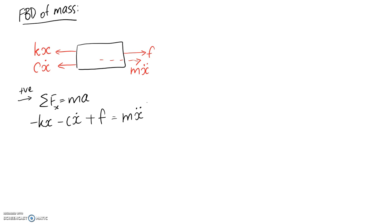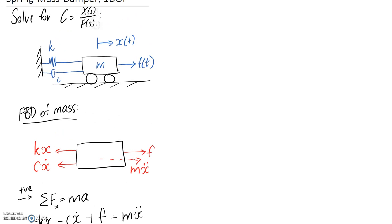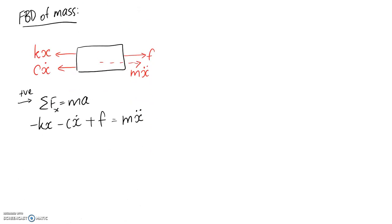All right, so now that we've got our equation of motion, it's just a matter of trying to rearrange it to get our transfer function. So remember that we're aiming to get x divided by f. Now at the moment, we have derivatives appearing in our equation. We've got the double dots here and the single dot here. In order to get around that, what we need to do is take the Laplace transform, and then we'll be able to deal with x just on its own.